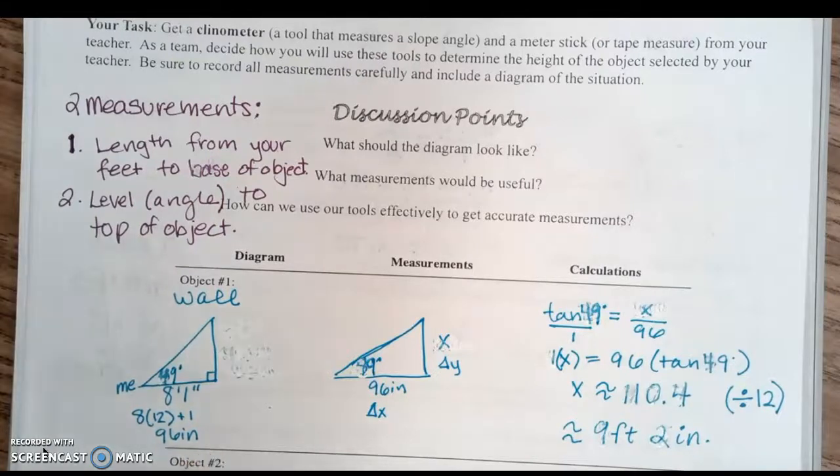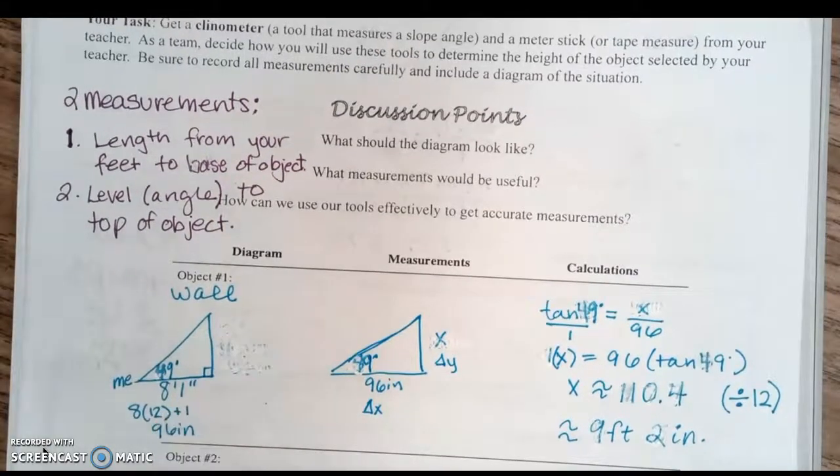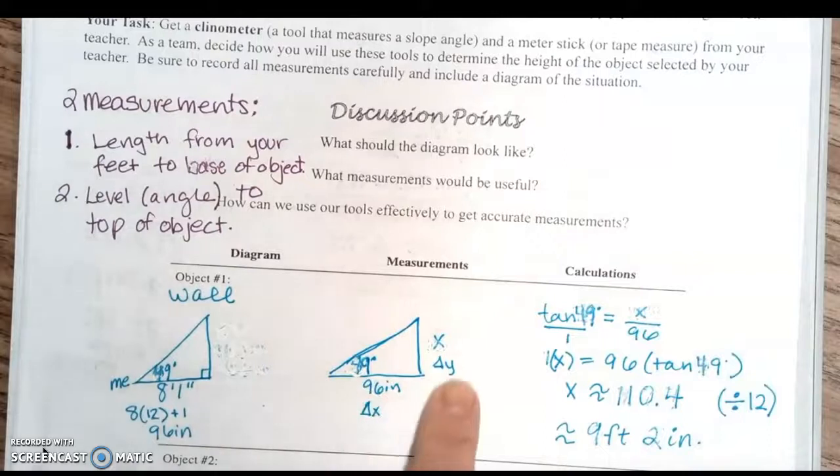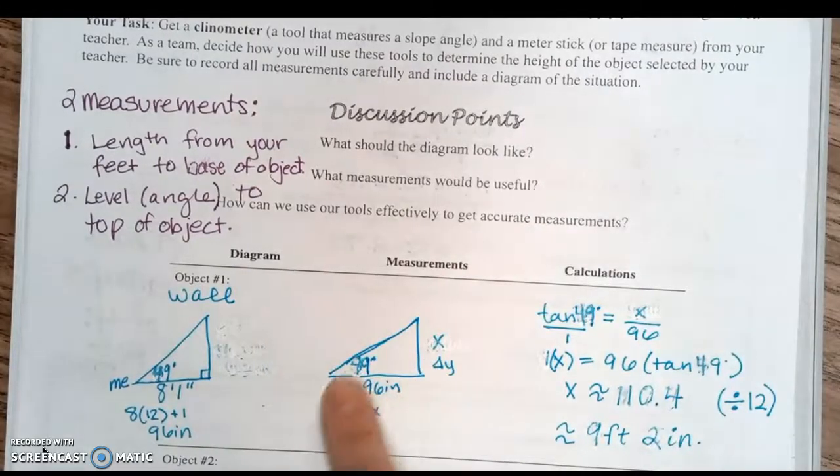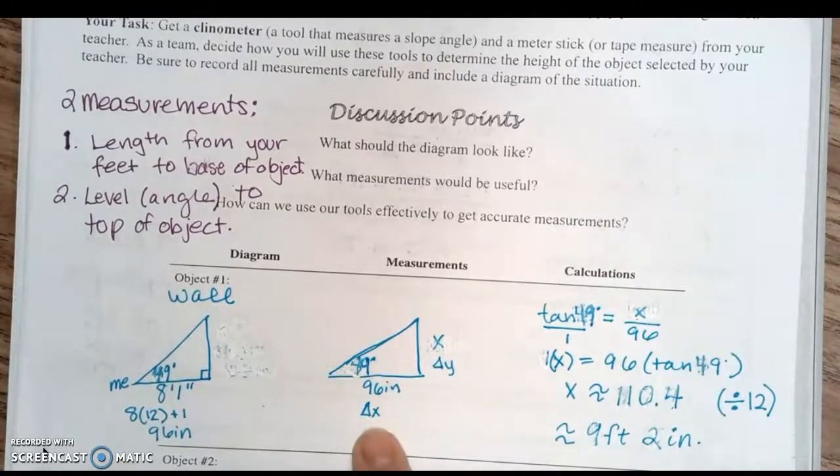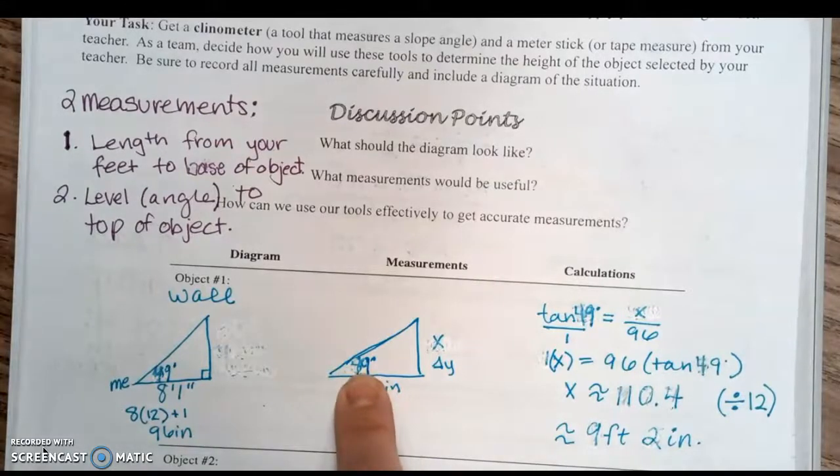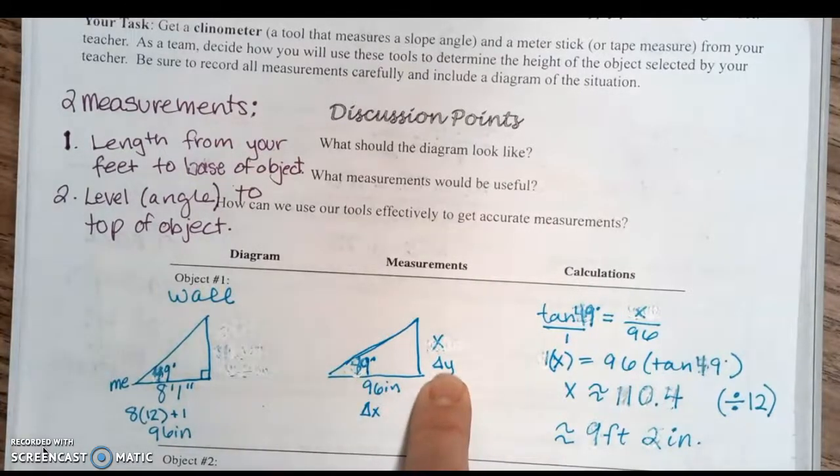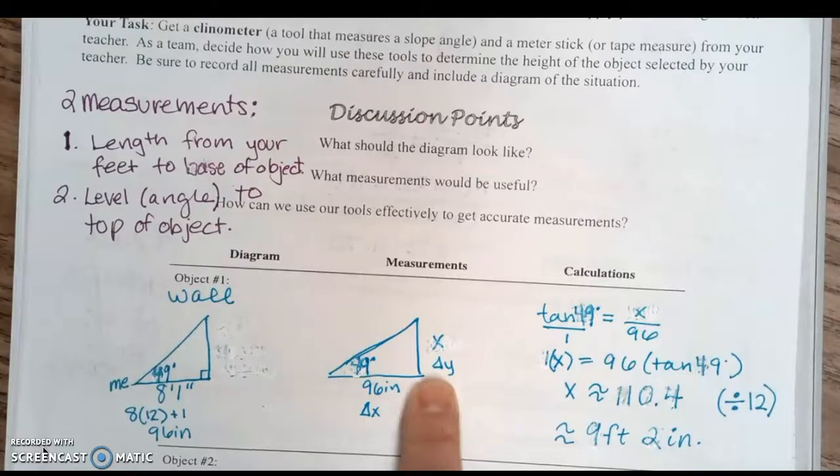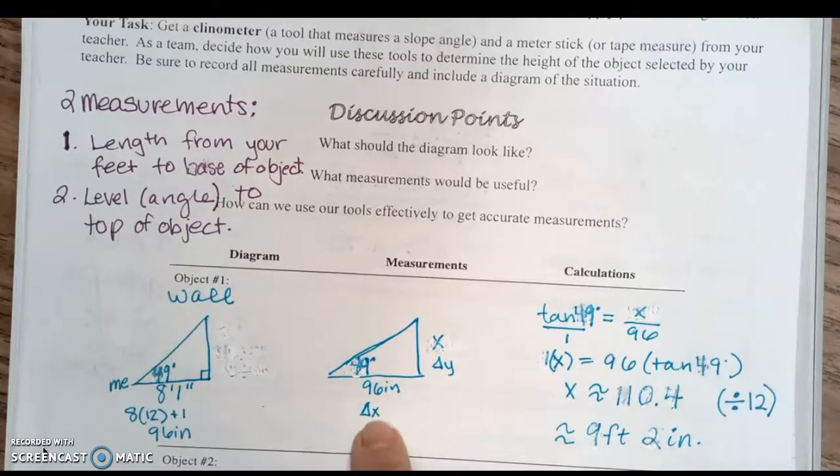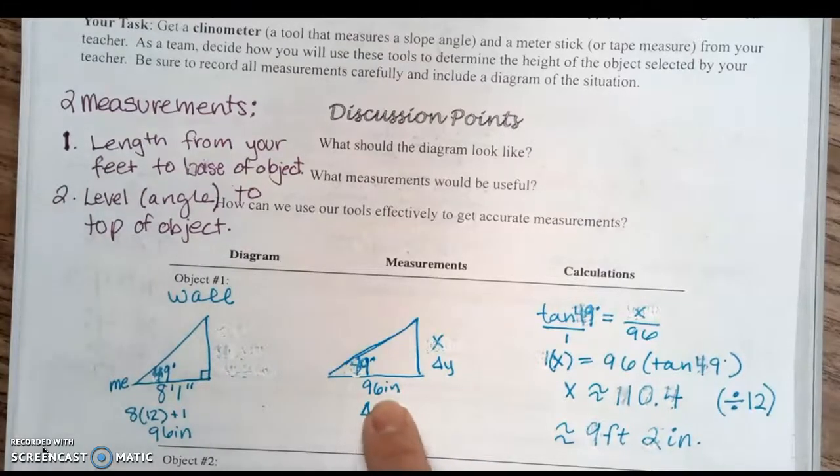Here's what it looks like on the tangent triangle: we fill in 49 degrees, our change in y is what we want to solve for, and we know that our change in x is 96 inches.